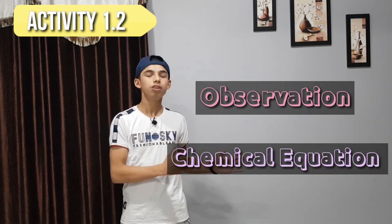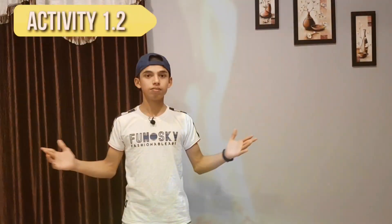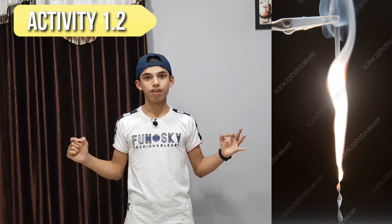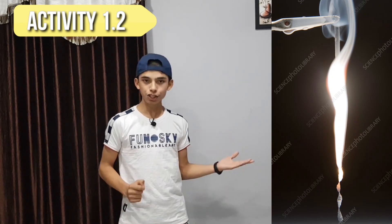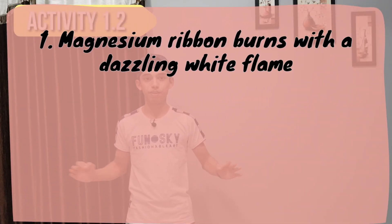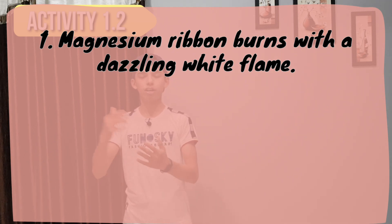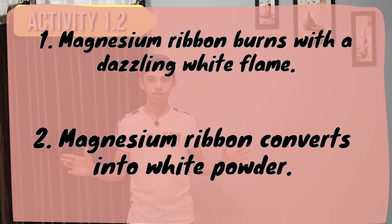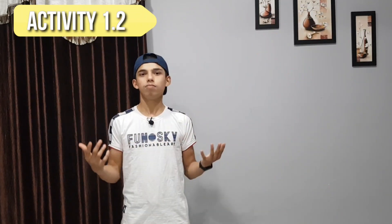For every reaction in this video we will note two things: the observation and then the chemical equation. In this activity, we take the magnesium ribbon, clean it with sandpaper, and then burn it. The observation is that the magnesium ribbon burns with a white dazzling flame — 'dazzling' meaning bright. That is our first observation. The second observation is that the magnesium ribbon converts into a white powder.